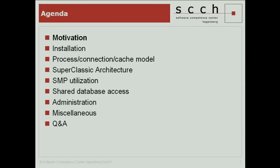A few words about motivation. I will show you a quick way to install multiple instances of Fiber 2.5 because we will do a few examples using different architectures. We will talk about the process, connection, and cache model in the different architectures. In Fiber 2.5 there is a new architecture called Super Classic. Then I will show a demonstration of how SMP utilization looks in the different architectures, and talk about a new feature — the shared database access — which is, in my opinion, very useful. A few aspects about administration. Please ask any questions during the session.